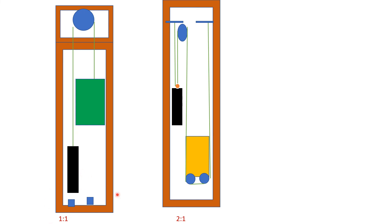The roping methods are 1:1 roping and 2:1 roping. In 1:1 roping, the rope is connected to the counterweight where the cable travels as far as the car in opposite directions. It is used for geared traction or high-speed elevators. In 2:1 roping, the rope wraps around sheaves on the counterweight and then connects to the top of the shaft.